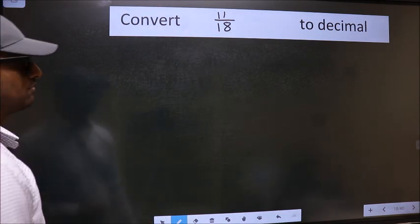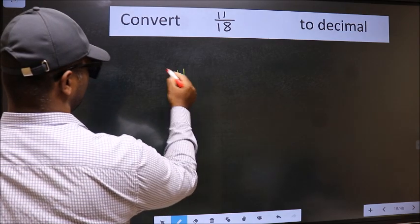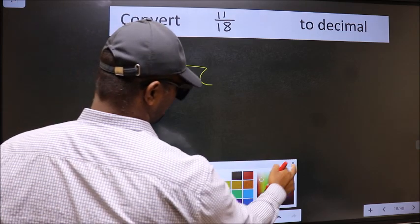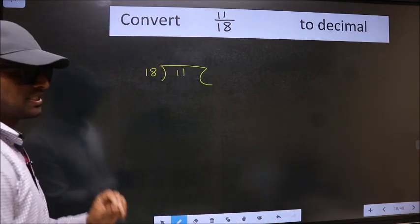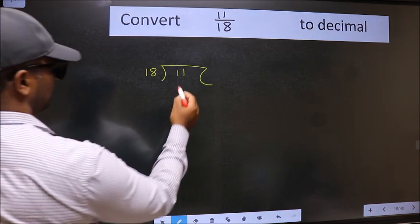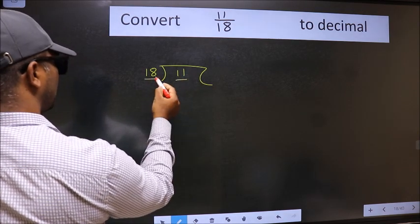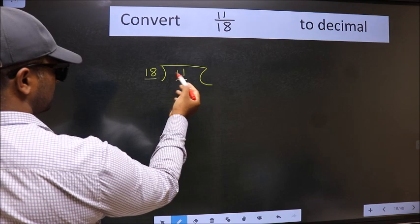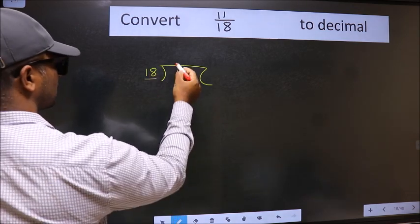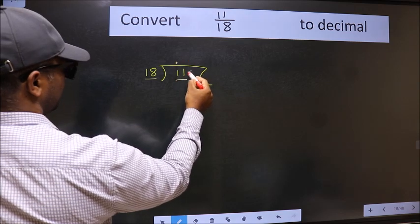11 here and 18 here. This is your step one. Next, we have 11 and 18. 11 is smaller than 18, so what we should do is put dot and take 0, so 110.